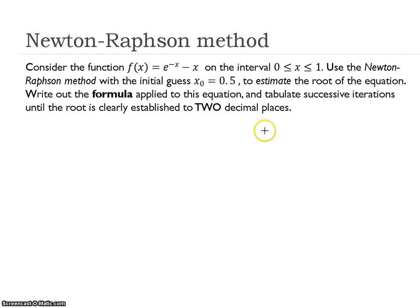So let's write the formula for this Newton-Raphson method. This is the original formula of Newton-Raphson method. So our f(x) is given e to the power negative x subtract x. So we need to find the first derivative. So differentiate f(x), we get this. So our formula is changed to this.